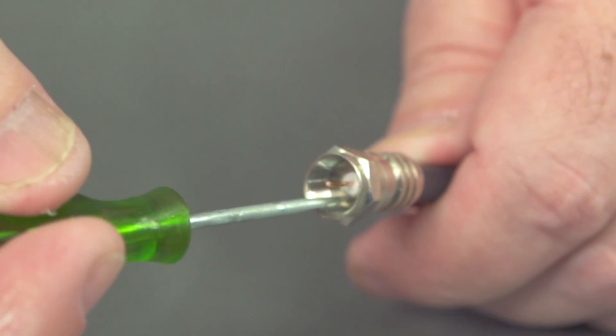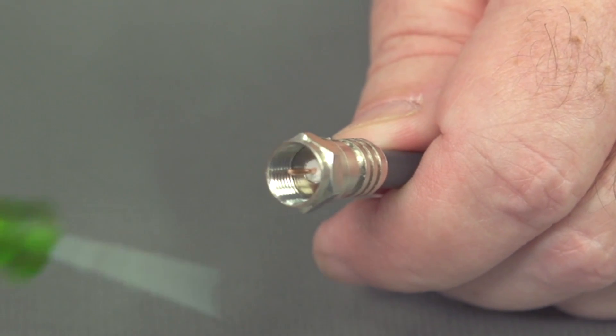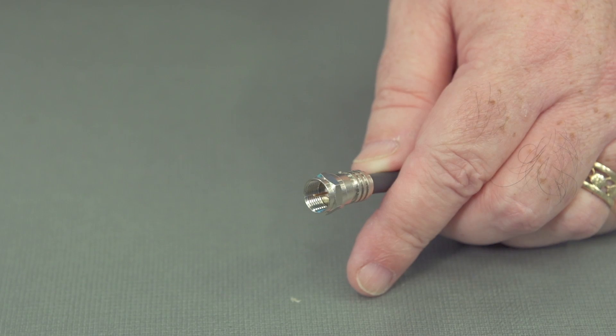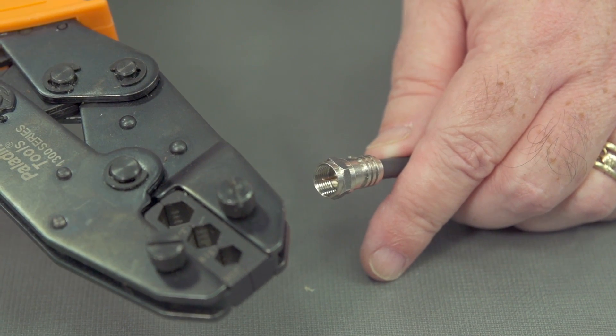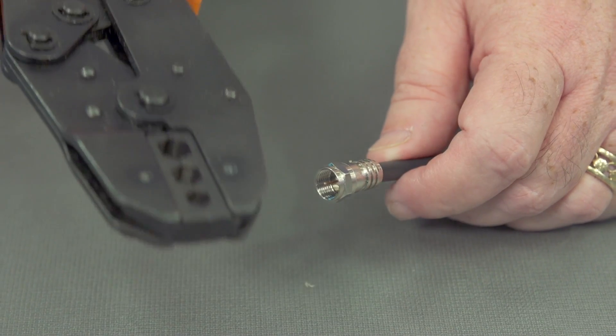Now you can see how the dielectric is flush here. The next step is to use our crimper, and we've selected the right crimper here for the tool or for the connector.